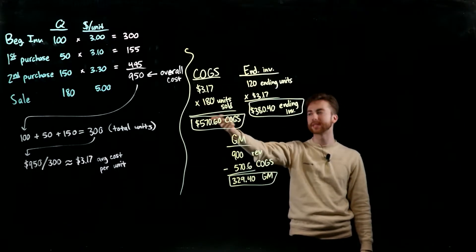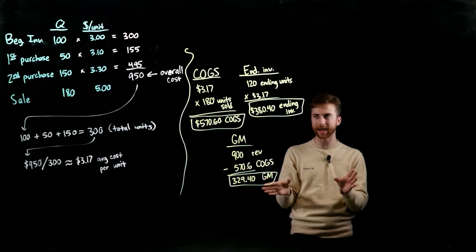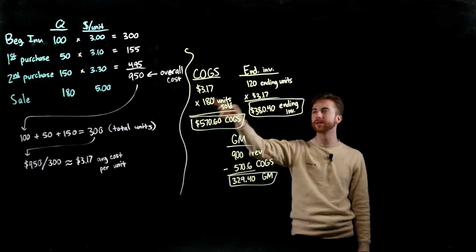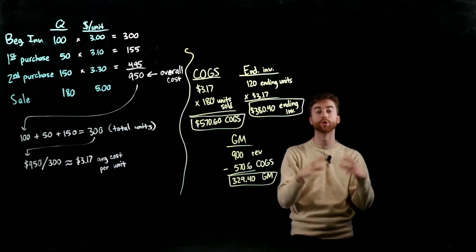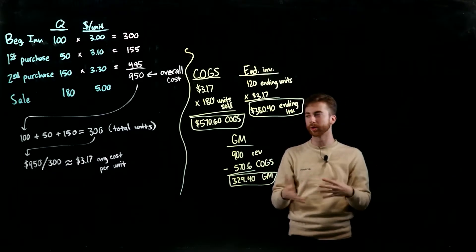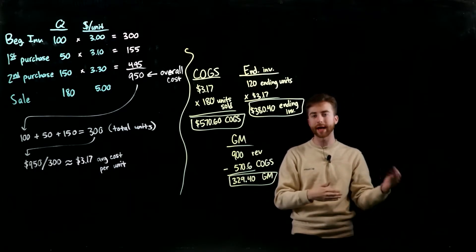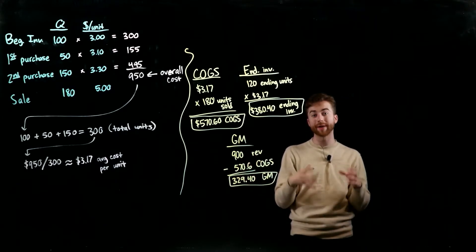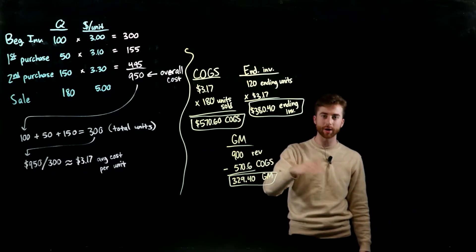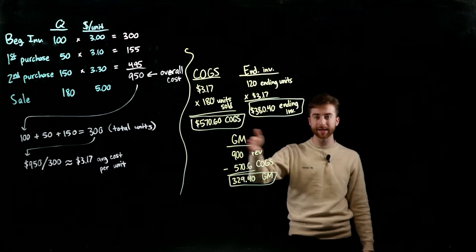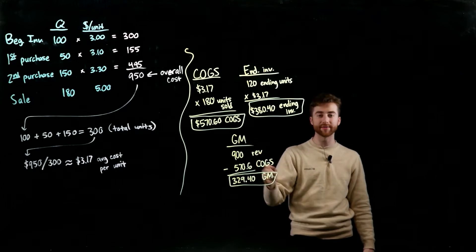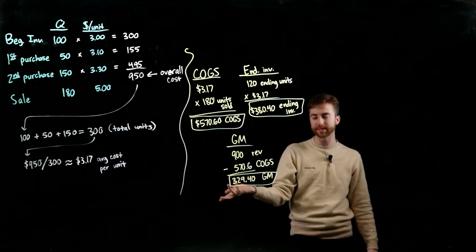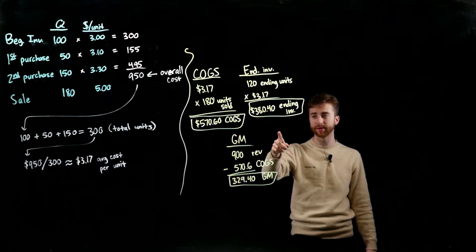Take each layer's quantity × cost per unit: 100 × $3.00 = $300; 50 × $3.10 = $155; 150 × $3.30 = $495. Add them up: total cost = $950. Total units = 100 + 50 + 150 = 300. So weighted average cost per unit = $950 ÷ 300 ≈ $3.17. For COGS: 180 units sold × $3.17 = $570.60.